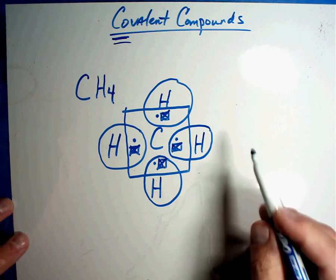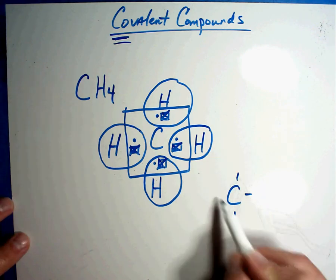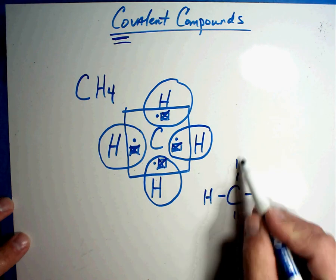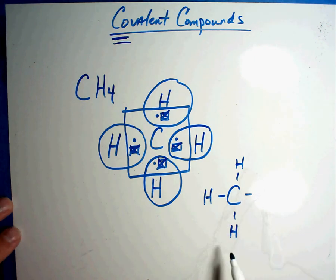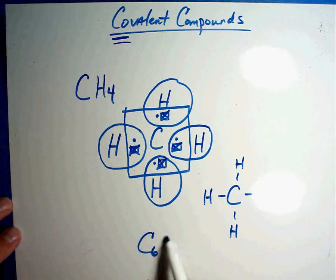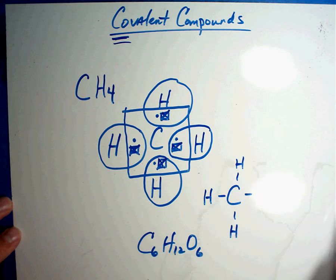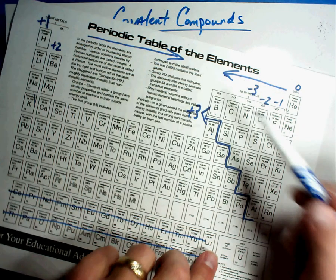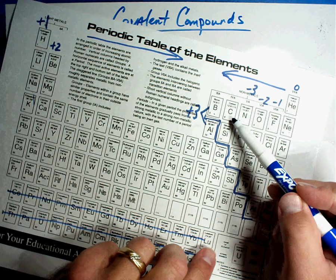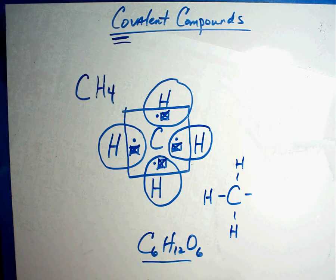This is what is called a covalent bond. There are no charges. Nobody threw away electrons. Nobody stole electrons to be positive or negative. They just share. When they share, what you'll see sometimes is it'll be drawn like this. Rather than all the dots, which can really clutter up the area, you'll see it written something like this. There's your C and there's your four H's. Remember biology a little bit, we have really big compounds like C6H12O6, which is glucose. That's just a really big one of these. Now hint, if you see a compound that starts with a C, it's going to be covalent. They're going to have to share.